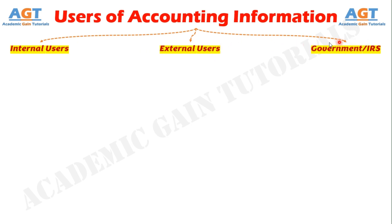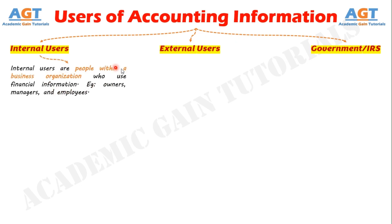Each group uses accounting information differently and requires the information to be presented differently. Internal users of accounting information are people within a business organization who use financial information. Examples of internal users are owners, managers, and employees. Accounting supplies managers and owners with significant financial data that is useful for decision making.